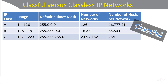When working with classful IPv4 addresses, the first number in the IP address dictates what class the address is part of. If the number is between 1 and 126, you're in class A. If it's between 128 and 191, you're in class B. If it's between 192 and 223, then it's class C. Those are the defaults — you look to the first octet of the IP address.